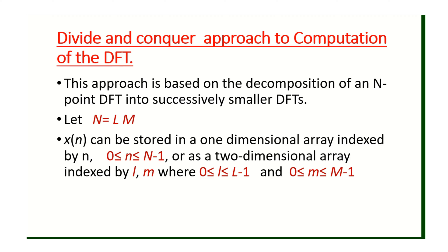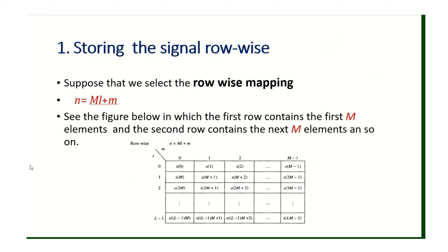For row-wise mapping, we write n equal to M·l plus m. Observing the figure, the first M elements are in the first row, the second M elements in the second row, and so on, with the last M elements in the last row. Starting from 0, there are a total of L rows and M columns, so L times M gives the total number of elements equal to N, which matches the input signal.